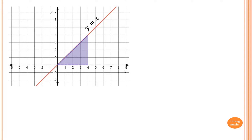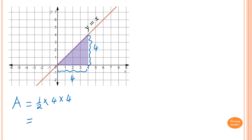To find the area of this triangle, we know that the height is 4 units and the base is 4 units as well. So area is equal to one half times base, which is 4, times the height, which is 4. So that gives me 8 square units.